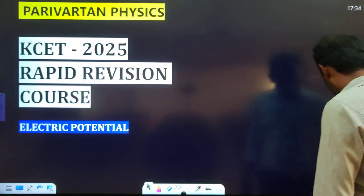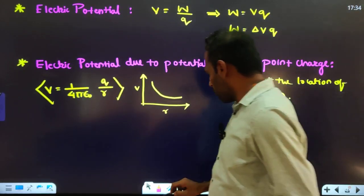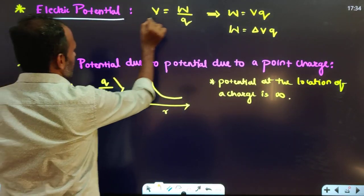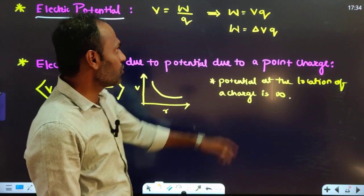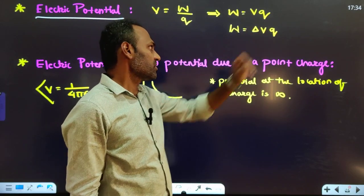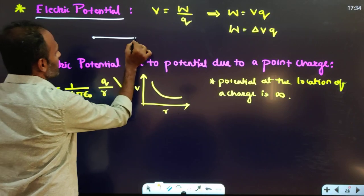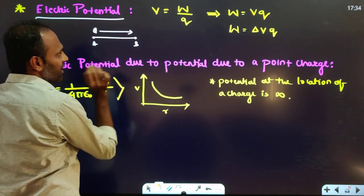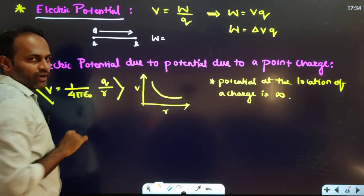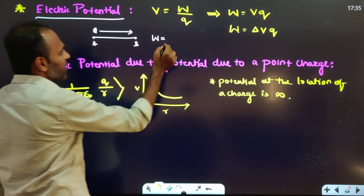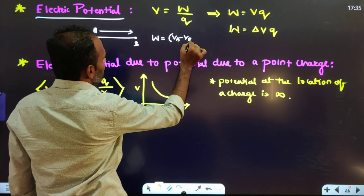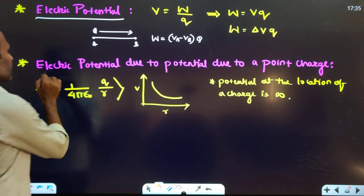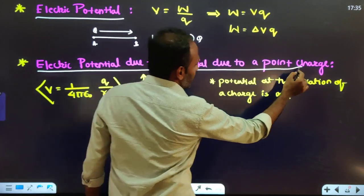Without wasting time, let us start the rapid revision of electric potential. Electric potential is given by V = W/Q, and work done is equal to potential difference into charge. So if you are moving a charge from A to B, the work done will be equal to the potential difference between these two points multiplied by the charge.